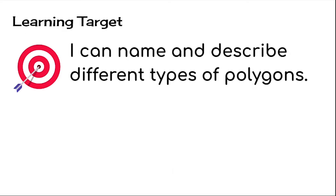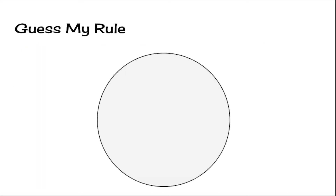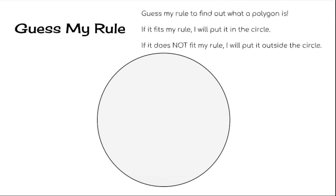Our learning target for today is: I can name and describe different types of polygons. And of course, the most important word here is polygons. Let's explore that word first — we'll play a game called Guess My Rule. You're going to guess my rule to find out what a polygon is. If it fits my rule, I will put it in the circle. If it does not fit my rule, I will put it outside the circle.